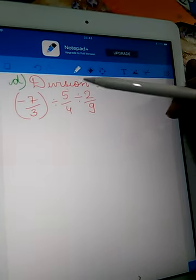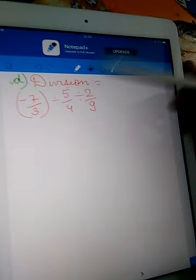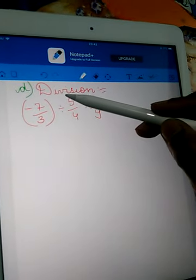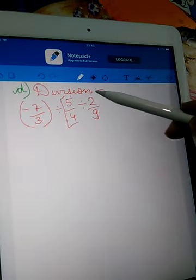Starting with the division under the associative property of rational numbers. We are going to regroup these two now.